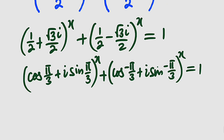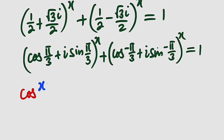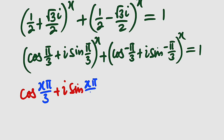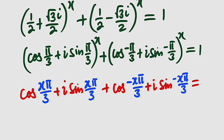According to De Moivre's theorem, the exponent can always multiply the argument. So we apply that. We have cosine of x times pi divided by 3, which gives us x pi over 3, plus i sine of x pi over 3. Then for the other parenthesis, we take the argument and multiply by x, giving negative x pi over 3. So we have cosine of negative x pi over 3 plus i sine of negative x pi over 3, and the whole of this equals 1.